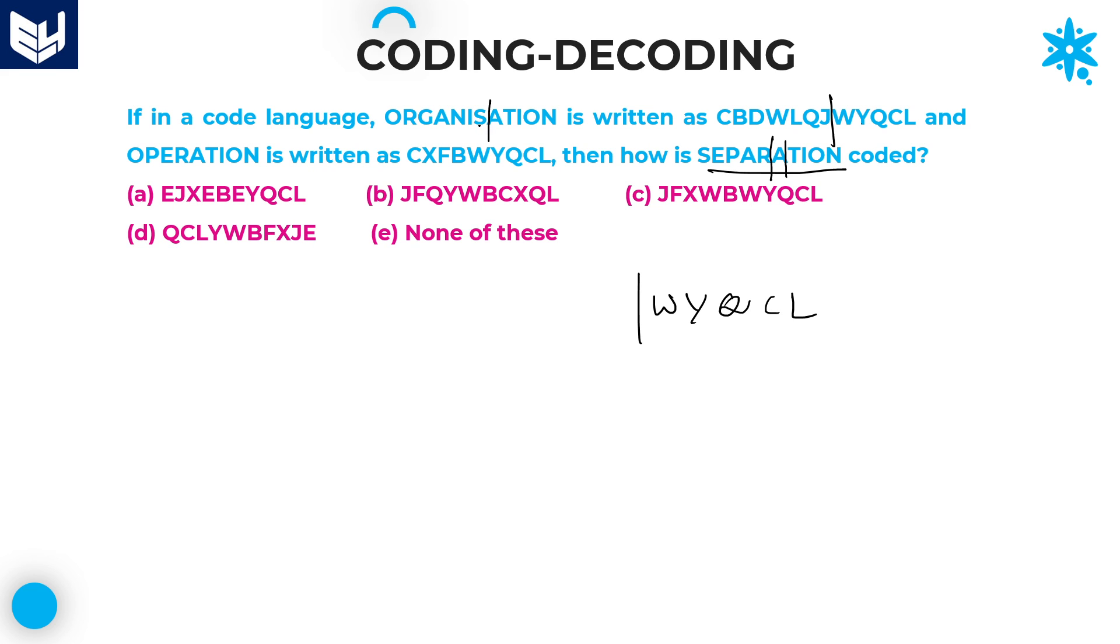Last five letters are over. Now you have to check it out for only first five letters. S is nothing but J. E is equal to F in third position. P is at second position, which is nothing but X. A is already written here, that is W. And R is at second position, here the second position is B. Therefore, our required answer for this question is J-F-X-W-B-W-Y-Q-C-L. That is the required answer.